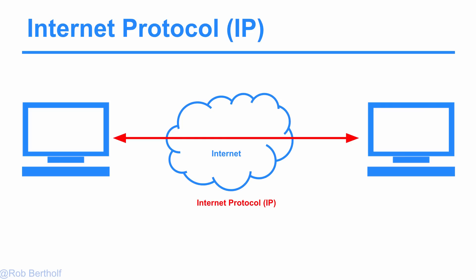An internet protocol is a protocol responsible for addressing, sending, and receiving the data packets that go over the internet. We're going to be referencing this cloud-looking item, and that's what we call the internet — the internet is often referenced as a cloud. The red line that connects it to them is the internet protocol, so it's a protocol that allows computers to communicate with each other through the internet.